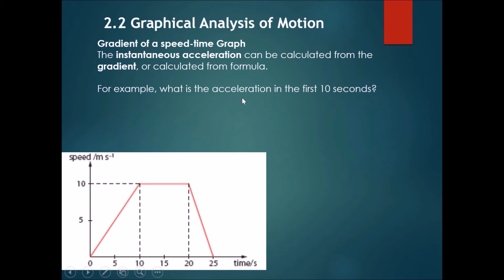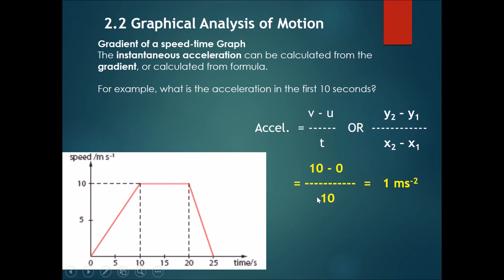For example, what is acceleration in the first 10 seconds? You can use either the formula A equals V minus U over T, or you can use the graphical method, which is acceleration would be the gradient of the graph at that point. So you can use the coordinates method just like the one before. The first method is where you take the final speed, 10, minus the initial speed of 0. Then you divide all this by the time taken, which is 10 seconds. This will get you 1 ms per second squared.